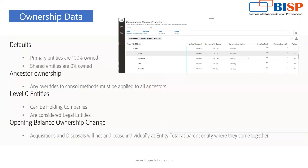For ancestry ownership, any override to the consolidation method must be applied to all ancestors. Suppose we have a level-zero entity and the consolidation method is equity — for example when we have more than 50% ownership but the entity is on the equity method — we must also define the equity method for the parent-level entity. Otherwise the system will assume it is a subsidiary and will not treat it as an equity company.